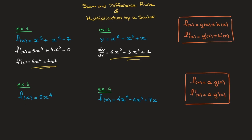Going back to this example, we have x to the power of 4 which is being multiplied by 5. Using this rule, the derivative f'(x) is equal to that same number 5 times the derivative of x to the power of 4, so that's times 4 times x to the power of 3. Simplifying, we have 5 times 4 which is 20, so f'(x) equals 20 times x to the power of 3.